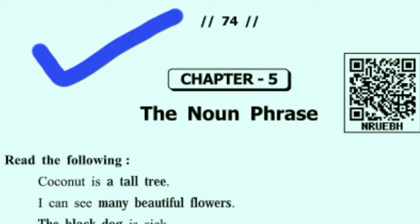First, the noun phrase. We are all aware of nouns — a noun is the name of a person, place, idea, and quality of a person, a thing, and a place. Today in this class, to clear our concept of noun, we will discuss the noun phrase.